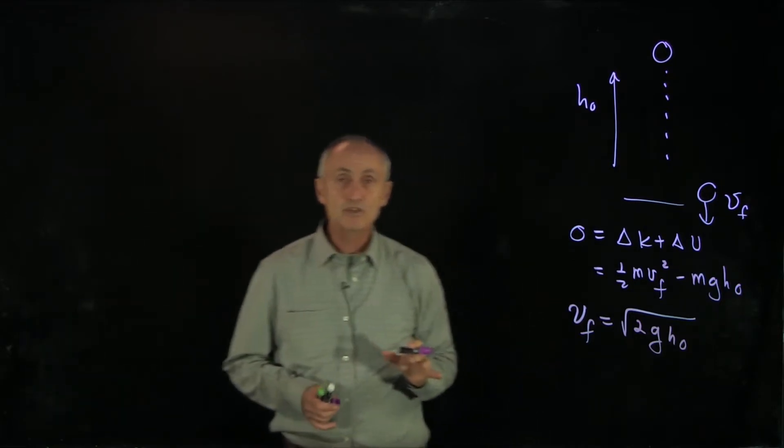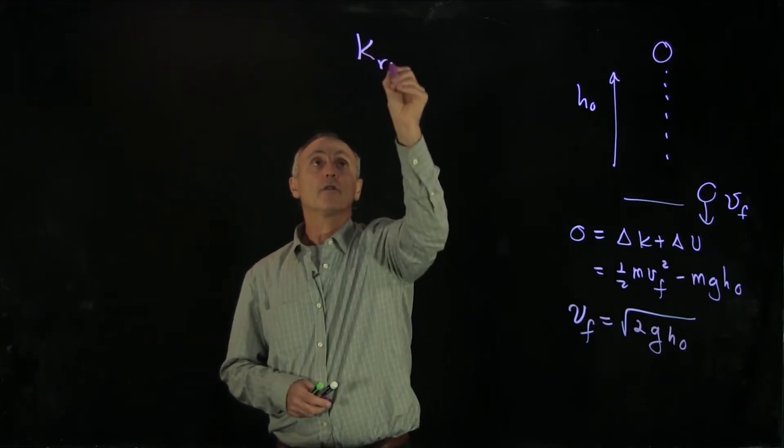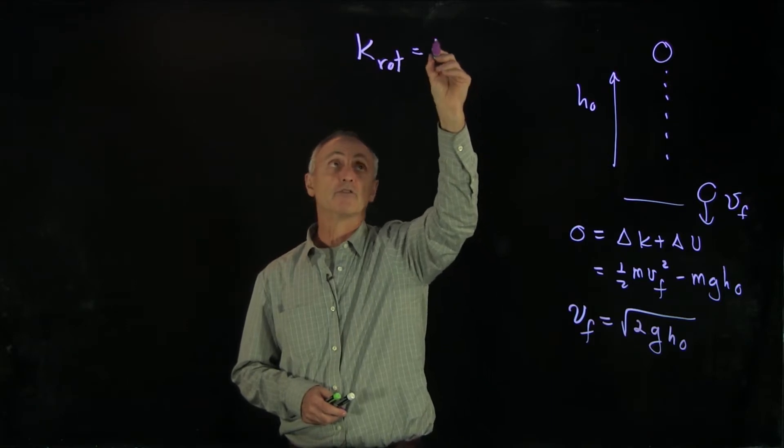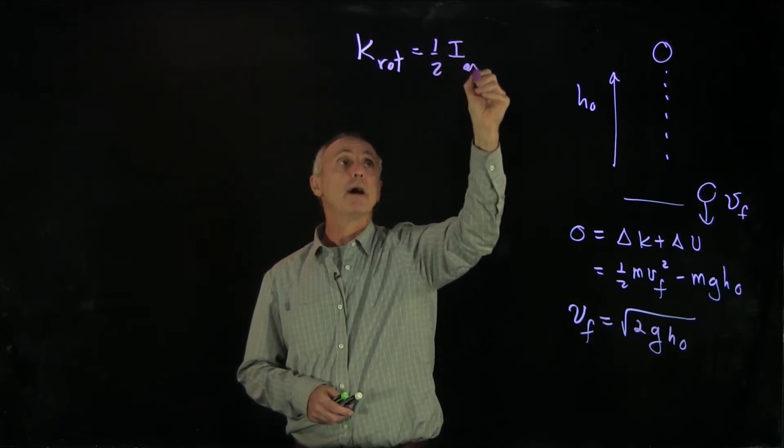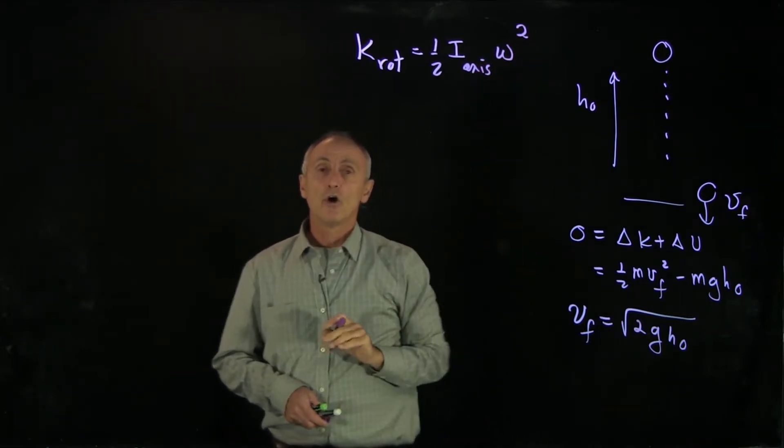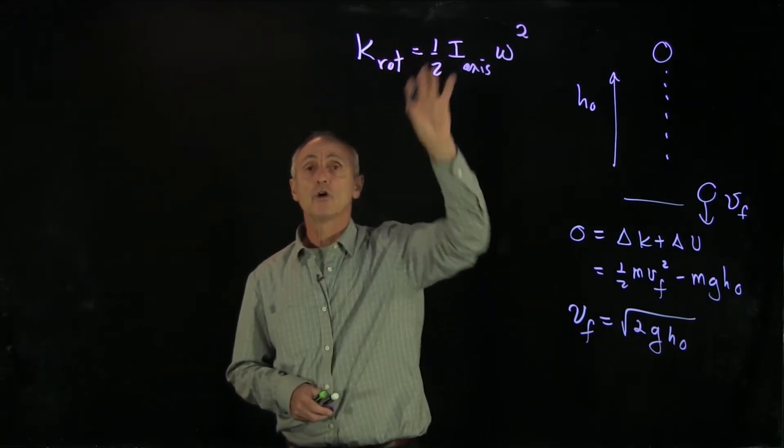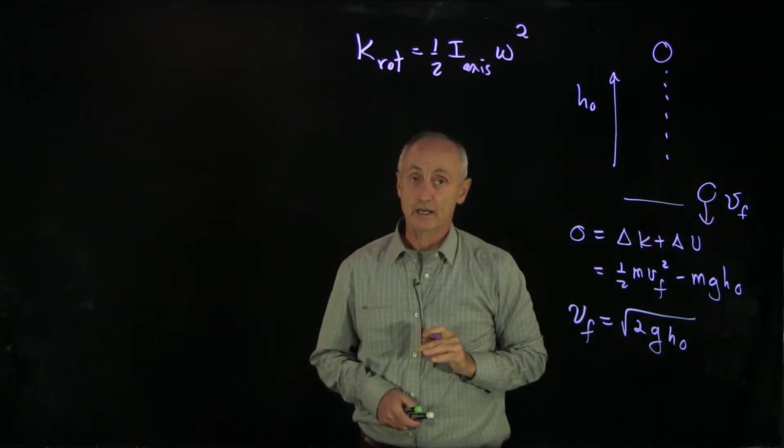Now that we're considering kinetic energy of rotation, recall that we showed that the kinetic energy of a pure rotation about a fixed axis was 1 half the moment of inertia about that axis times the angular speed squared. We now would like to apply our energy principle to include rotational kinetic energy along with translational kinetic energy.